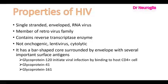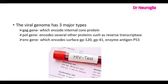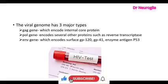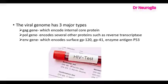HIV has a bar-shaped core surrounded by an envelope with several important surface antigens. Glycoprotein 120 initiates viral infections by binding to the host CD4 cell. Glycoprotein 41 and Glycoprotein 161. The viral genome has three major genes: the Gag gene, which encodes the internal core protein; the Pol gene, which encodes several other proteins such as reverse transcriptase; and the Env gene, which encodes surface Glycoprotein 120, Glycoprotein 41, and enzyme antigen P53.